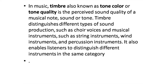Now let us see another element of music: timbre. In music, timbre is also known as tone color or tone quality, and is the perceived sound quality of a musical note. Timbre distinguishes different types of sound production, such as a choir voice and musical instruments like string instruments and wind instruments. For example, we can easily distinguish a guitar sound from a tabla sound — it is the element of timbre that allows us to distinguish between different types of voices or musical sounds.